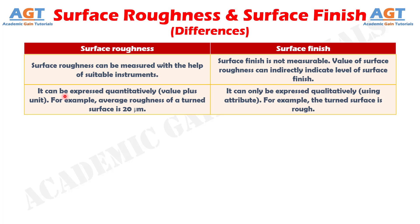Number two: surface roughness can be expressed quantitatively using a value plus unit. For example, the average roughness of a turned surface is 20 micrometers. Whereas surface finish can only be expressed qualitatively using an attribute. For example, the turned surface is rough.